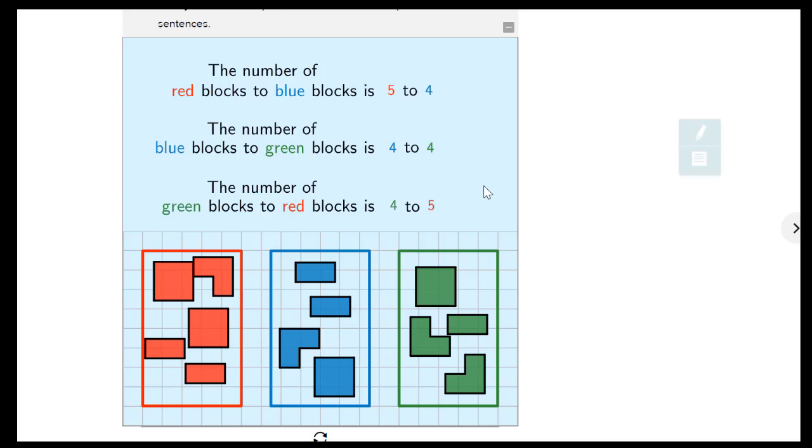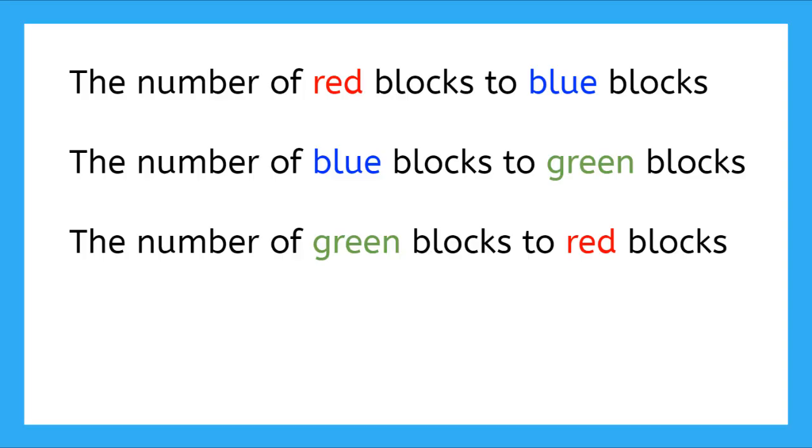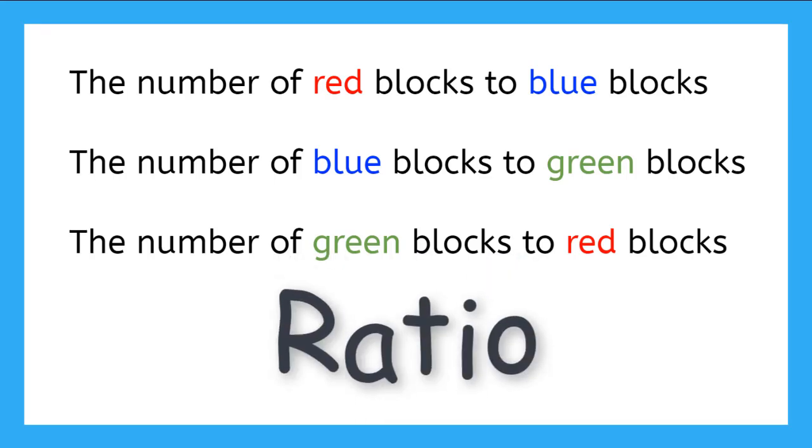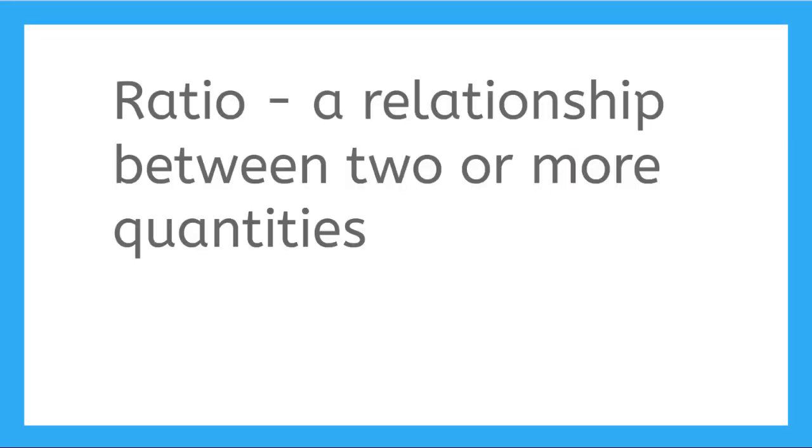So now we've completed all of the answers. What we just did was find a relationship between different things. This is called a ratio. A ratio is a relationship between two or more quantities. Remember, a quantity is an amount or how many of something you have.